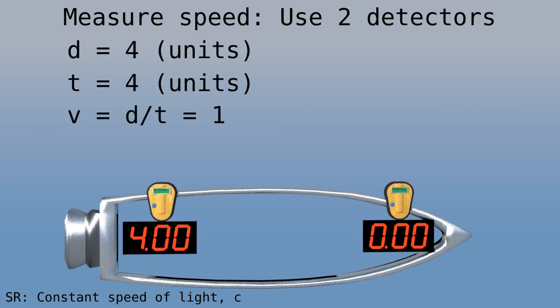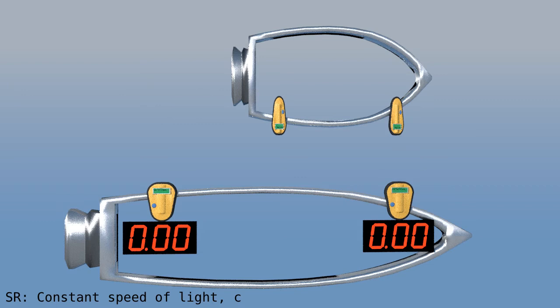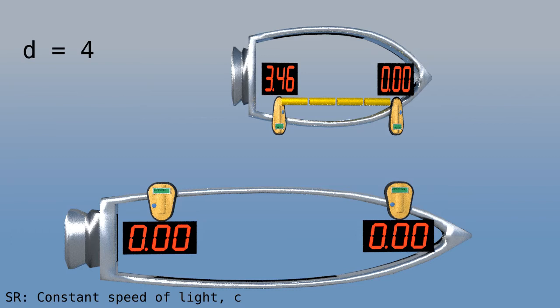But what about the moving spaceship? The poor guy has measurement equipment that's all messed up. The sticks are short. The clocks are slow and they don't even show the same time. So let's see what happens.